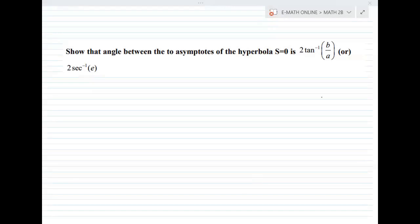Next question: Show that the angle between the asymptotes of the hyperbola S=0 is 2 tan inverse b by a, or 2 sec inverse e. Solution. First, I'll show asymptotes.